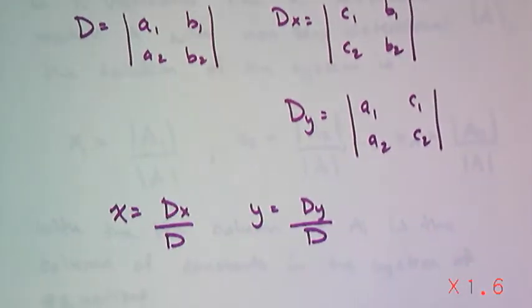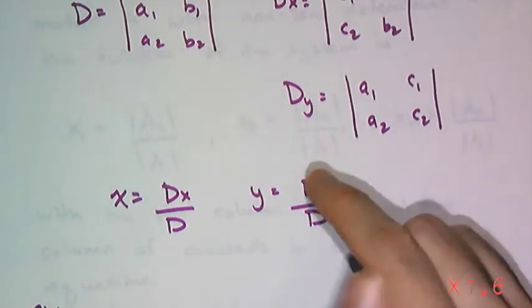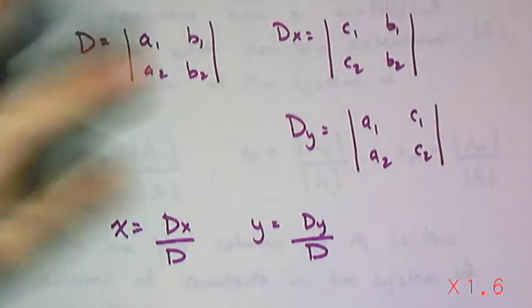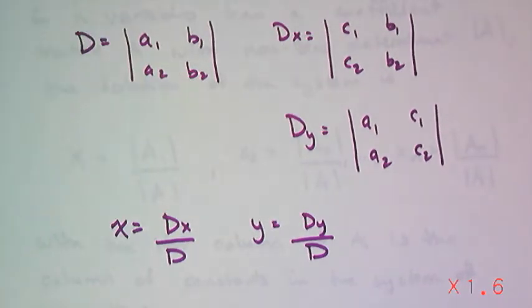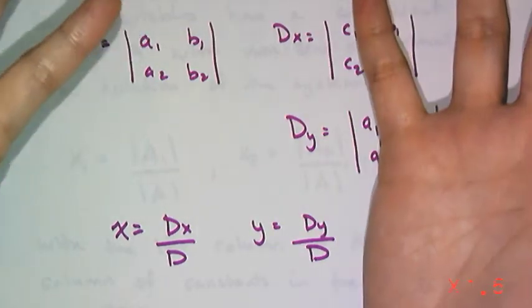Then the solution to the system is just dx over d and dy over d. So it's all about just using the determinants. All he did was he replaced the coefficients with the constants for the variable he was trying to solve for.